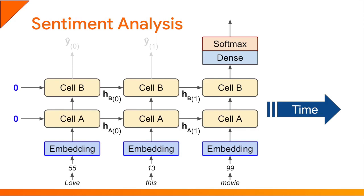That's it — this is a perfectly valid RNN for sentiment analysis. If there are just two classes — positive or negative — then you want a single unit in the output layer and you want to use the sigmoid activation function instead of the softmax activation function.